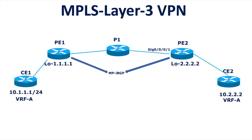To answer: if you form an MPBGP session between the loopback interface and a physical interface, the MPBGP session will come up, because as long as you have IP reachability from your local BGP IP to your remote neighbor IP address through any IGP, your BGP session will always come up. But whether the end-to-end Layer 3 communication of your VPN will work or not is the question.